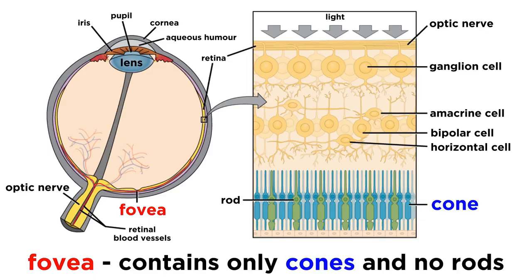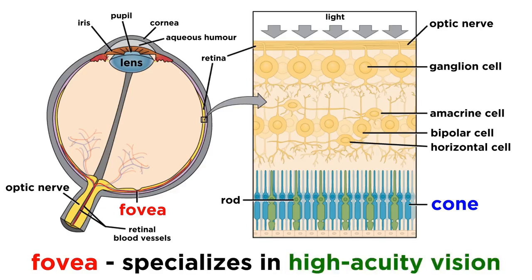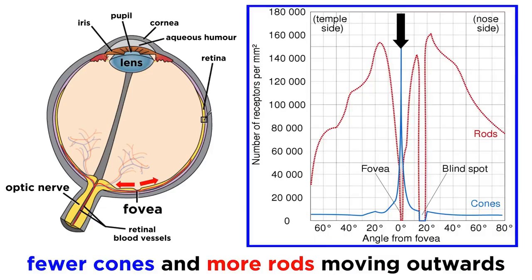Because this region is all cones, it is the part of the retina that specializes in high-acuity vision, meaning it can resolve small details. Moving out from the fovea, there are fewer cones and many more rods. The rods reach a maximum at 20 degrees away from the fovea on either side, and then begin to decline as well.